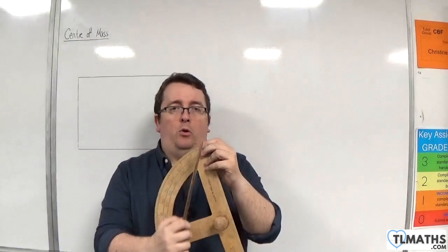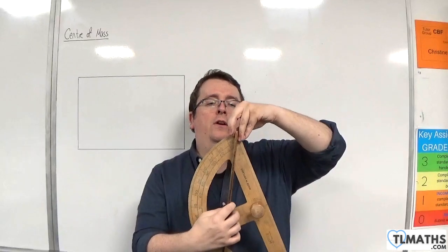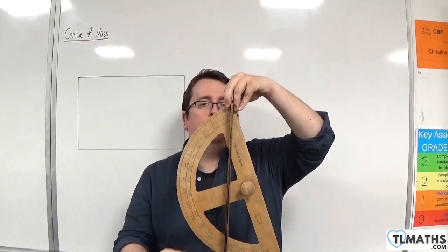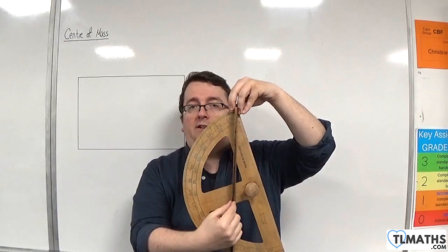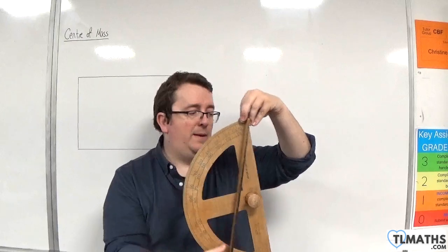So that's the important point here, that the vertical that it will make from where your point of suspension is will intersect your centre of mass of the object, of the lamina.